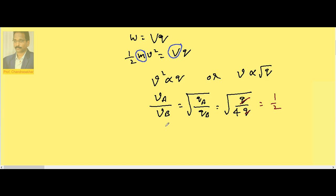1 is to 2. Therefore, the ratio of the velocities for the above charges when passed through same potential difference is 1 is to 2.